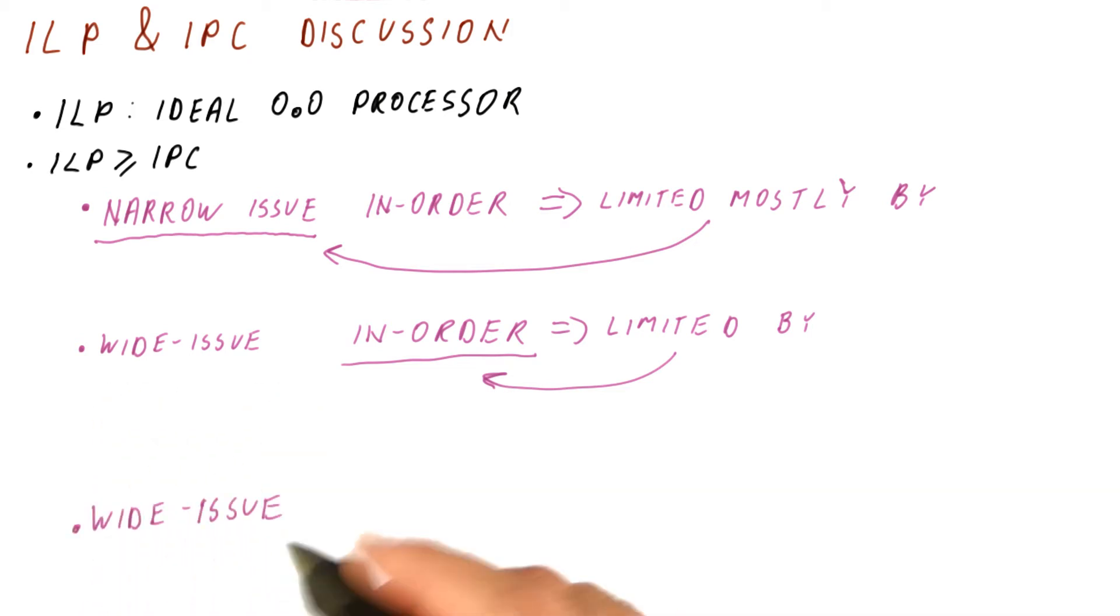So if we have a wide-issue processor, we also need for it to be out-of-order, so that it can benefit from the wider issue by finding instructions anywhere where they are and not basically stopping on the first dependence.